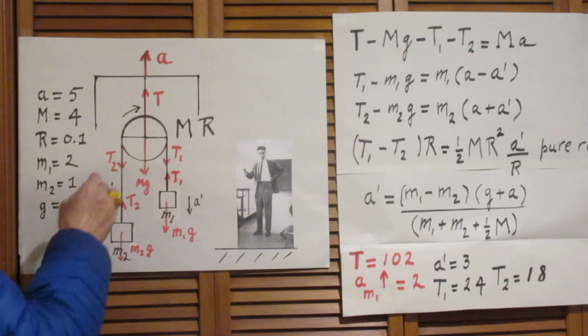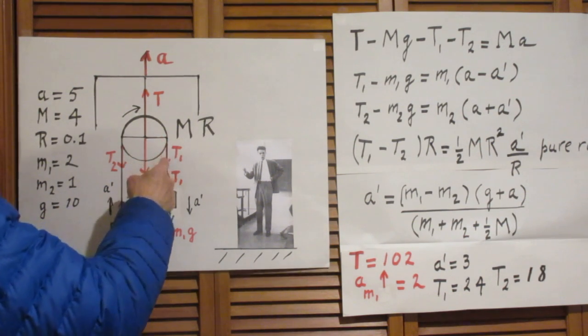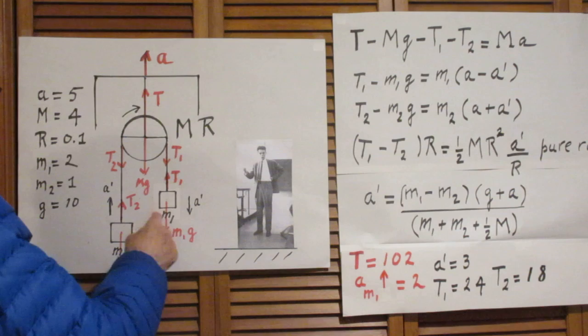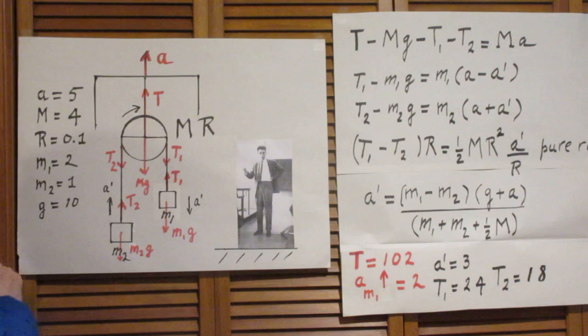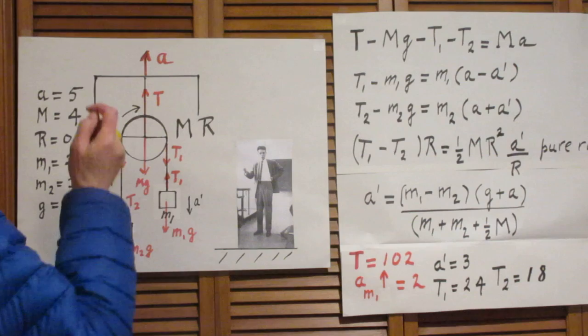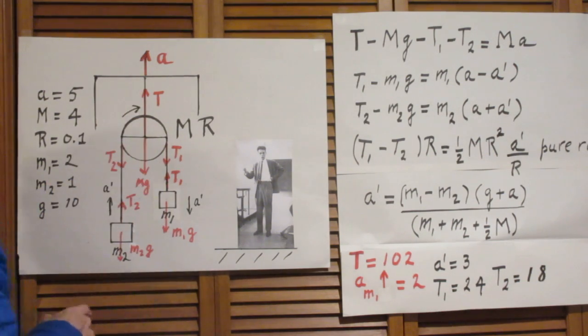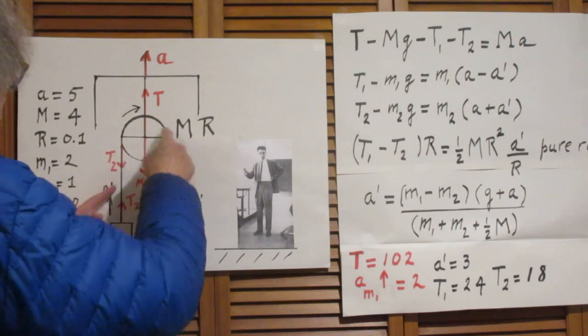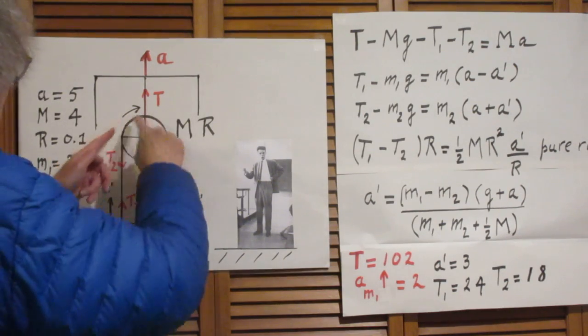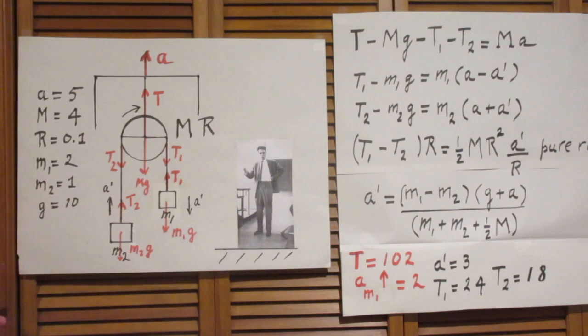On this side of the pulley is a string with mass m1 at the end. On this side, mass m2. You can ignore the mass of the strings because they are negligibly small compared to all the others. The key is that this string will never slip on the pulley - that's an essential part for our solution.